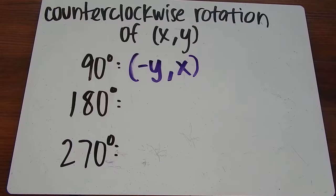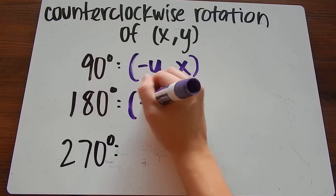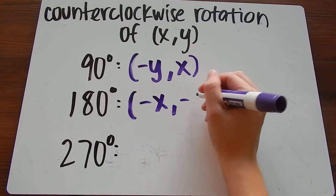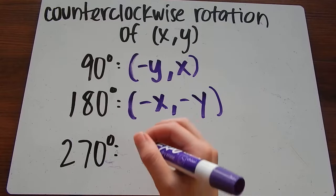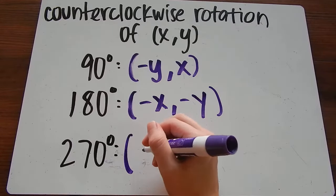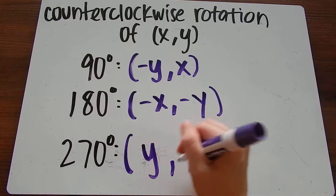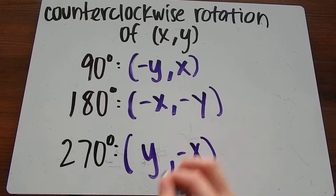When we rotate that same point 180 degrees, our new point is going to be (-x, -y). And when we rotate that point 270 degrees, our new point is going to be (y, -x). So we will keep these in mind as we go through the examples.